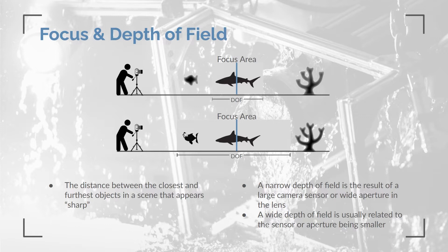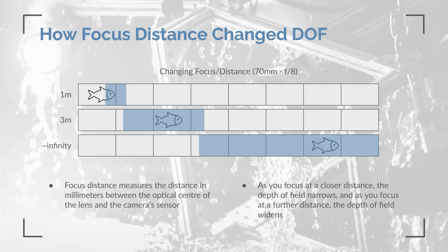Depth of field is the distance in the scene that is in focus at one time. It is determined by sensor size, lens aperture, and focal length. A narrow depth of field can result from a very large sensor or wide aperture. A wide depth of field is often related to a smaller sensor or narrower aperture. In subsea cameras, depth of field can be adjusted with focus distance — as you focus at near distance the depth of field narrows, and as you focus further away it widens. At infinity focus, it covers everything from roughly three to four meters to infinity.